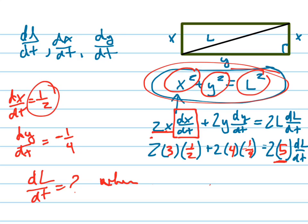Let's do that. The twos cancel, you get 3 plus negative 2, don't forget the negative, equals 10 DL/DT, which means DL/DT is 1 over 10. The diagonal is changing at one-tenth feet per second.